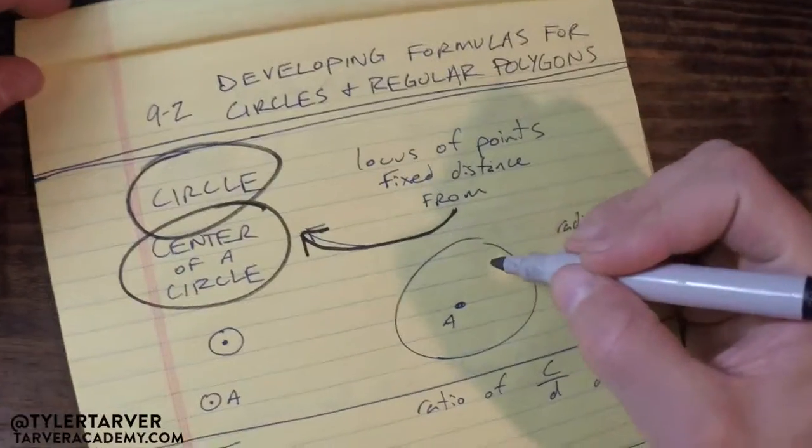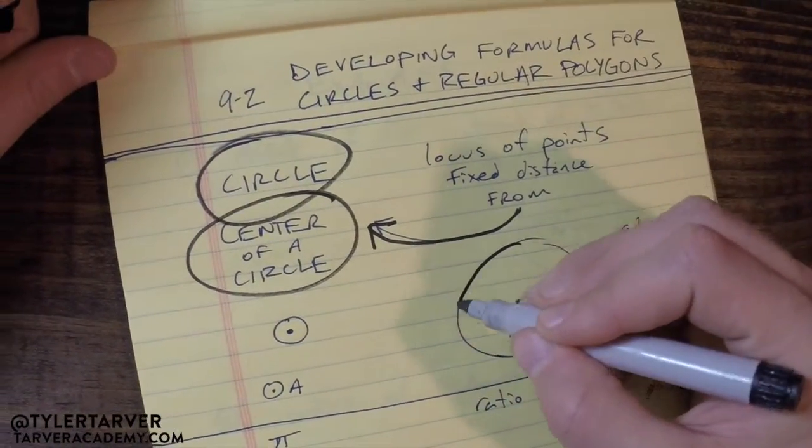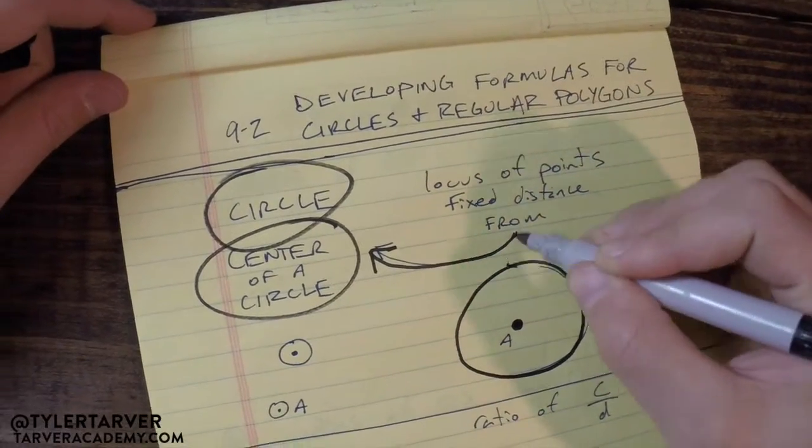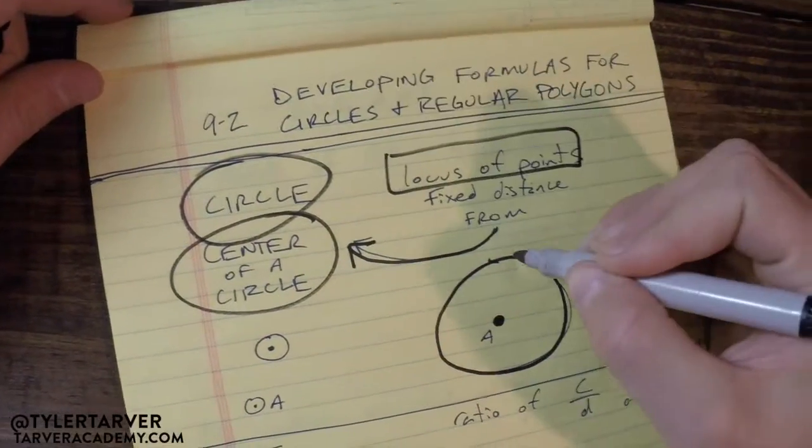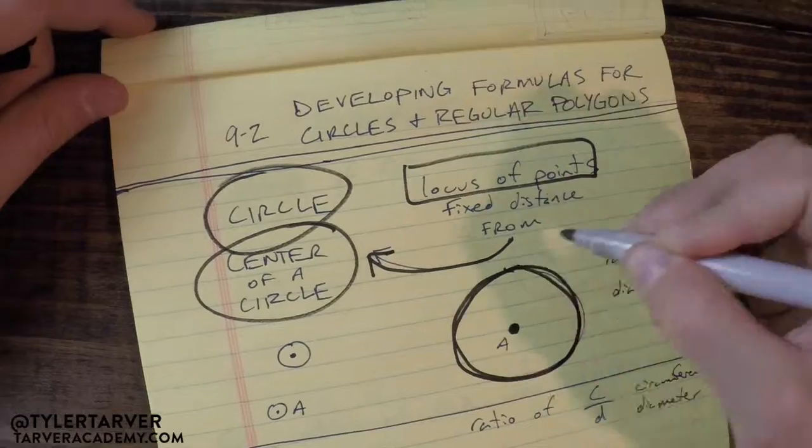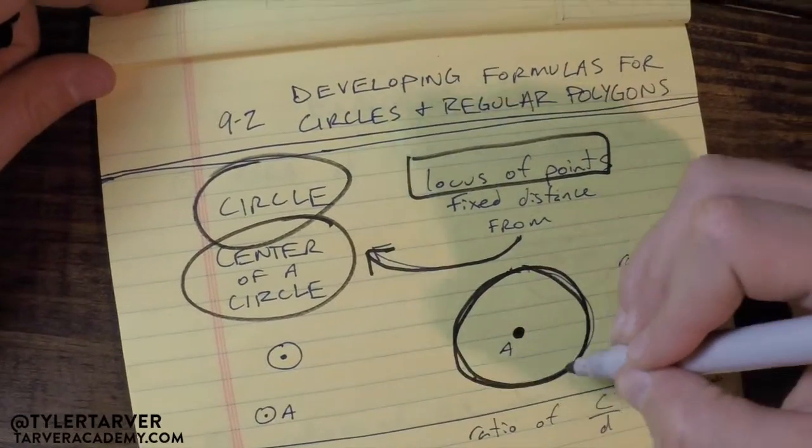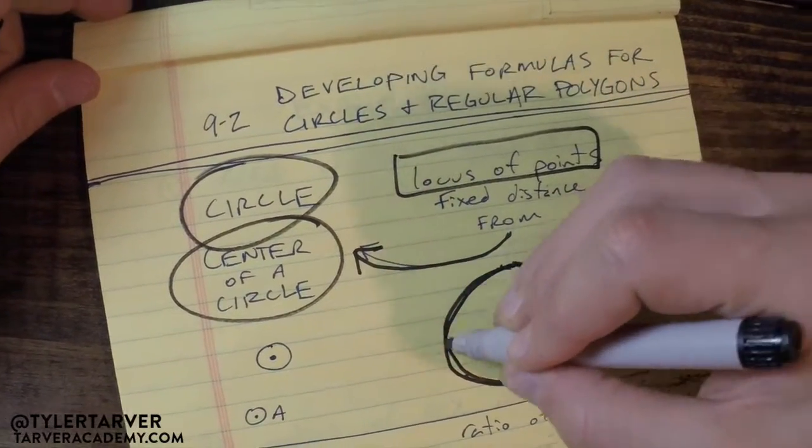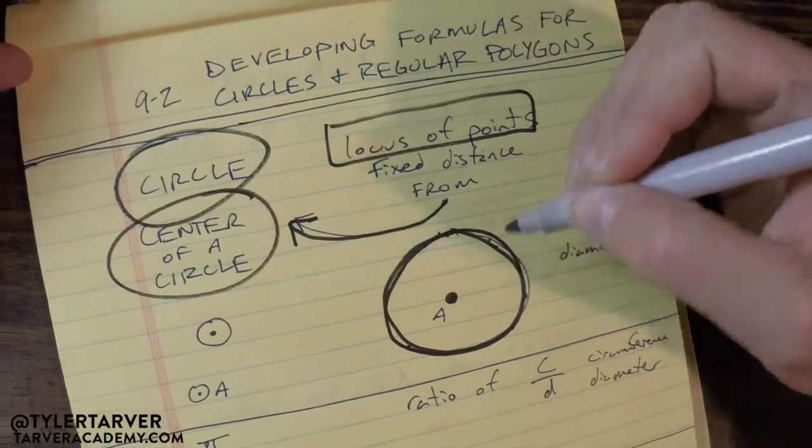Okay, so essentially, here's your center of a circle. This is your locus of points. Those are your points that go around there. Therefore, that is your circle. That's essentially a bunch of points put together all the way around in a circle.